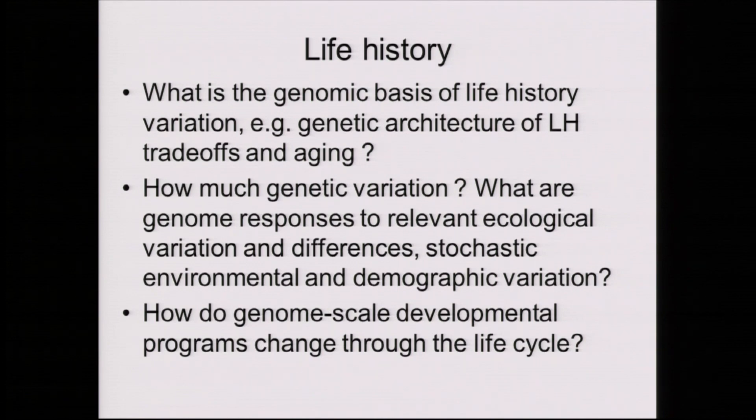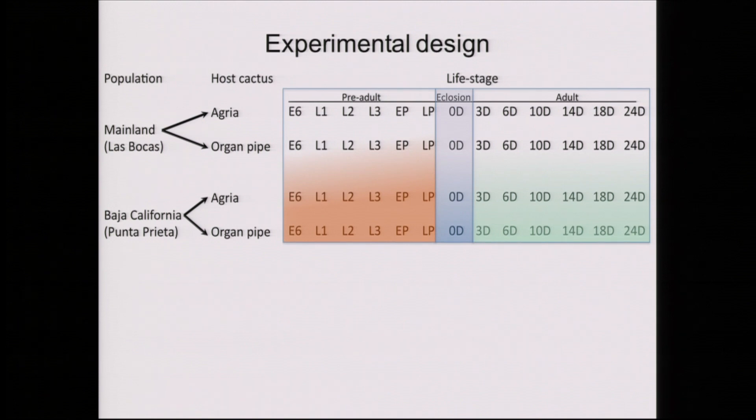In the first month of a human's life, genes have to come together in particular ways to form structure and produce early developmental things. Those same genes have to do other things when you are 30 years old, and still other things when you are 60. Networks are dynamic. What we were trying to do was trace the dynamics of these networks over the course of a fly's life, constrained by budget. We were interested in these life history questions: what is the genomic basis of what we're seeing, and how do genome-scale developmental programs change through the life cycle?